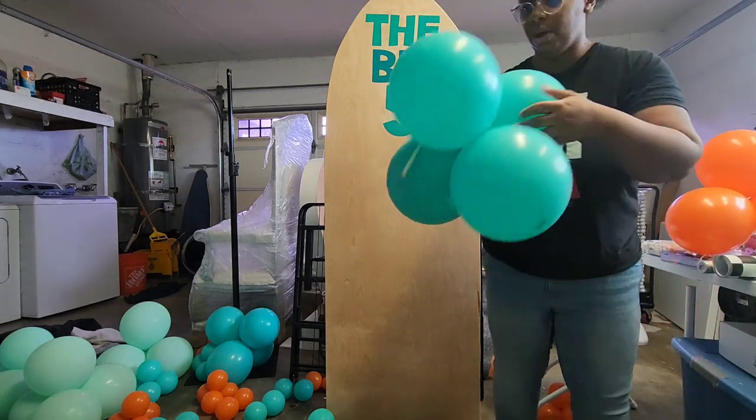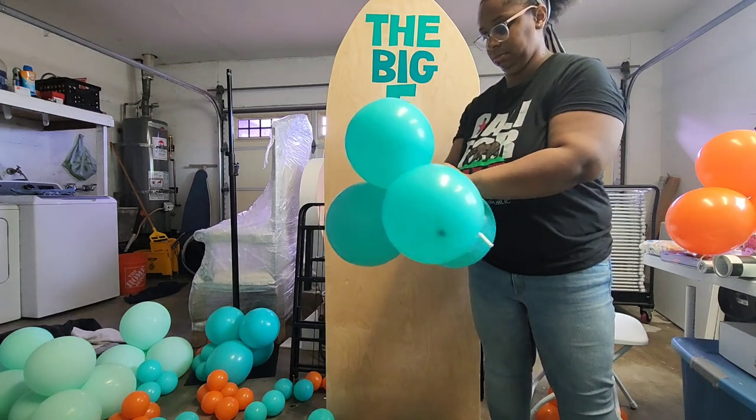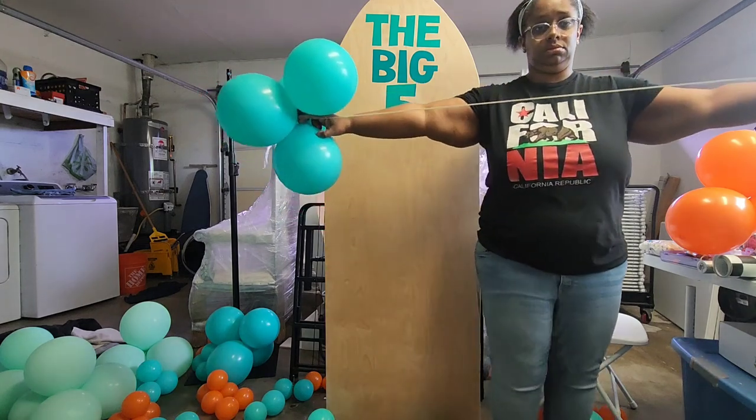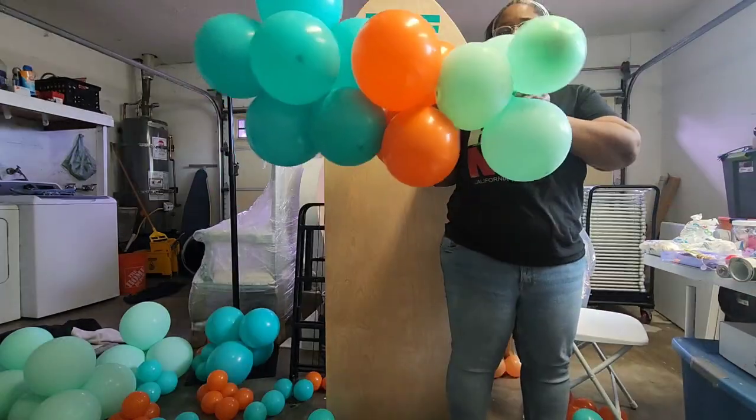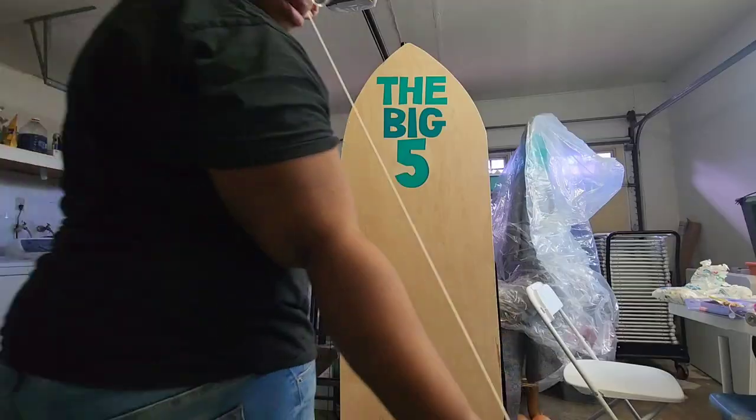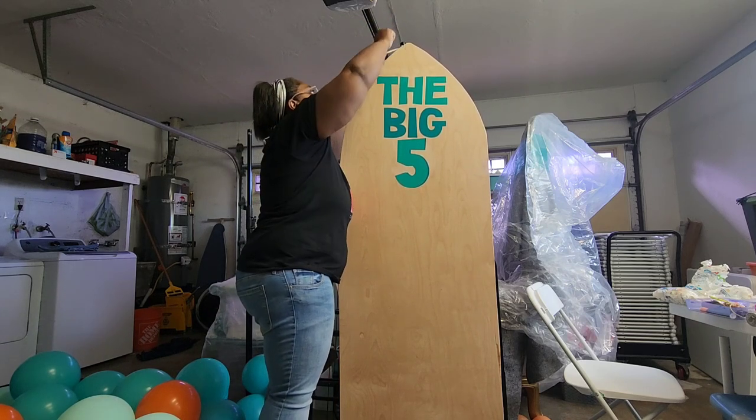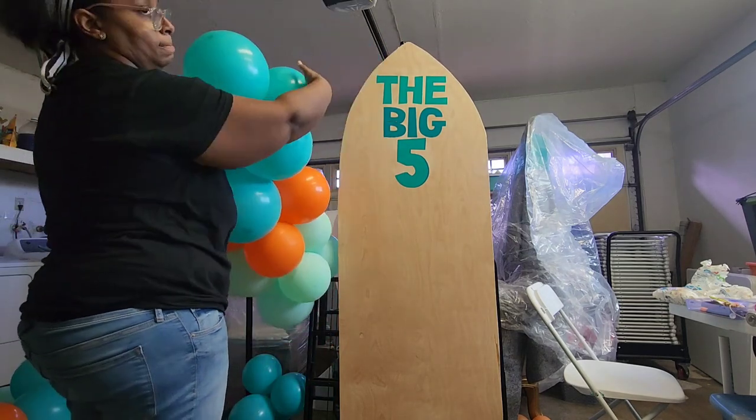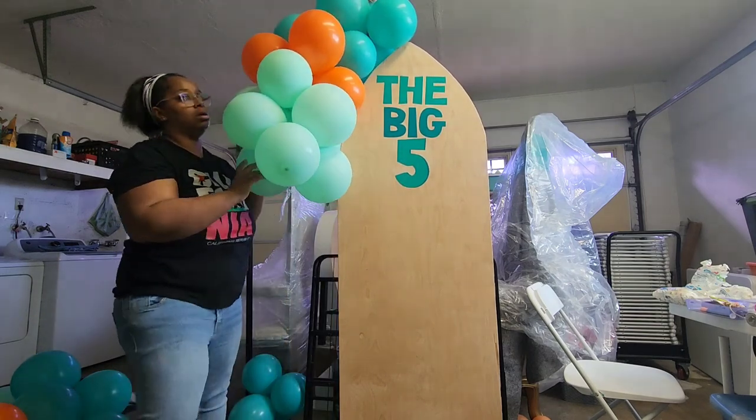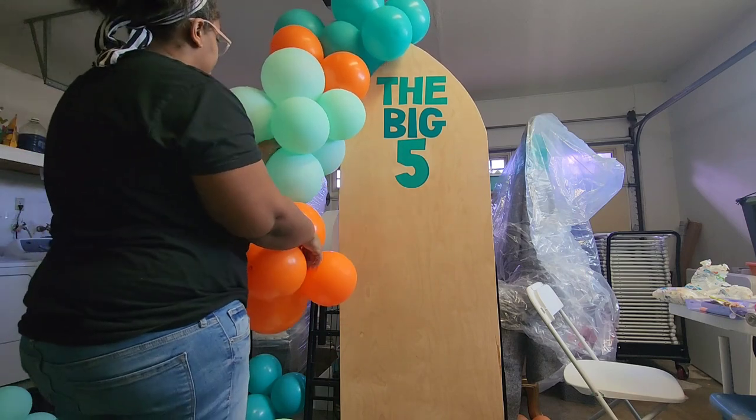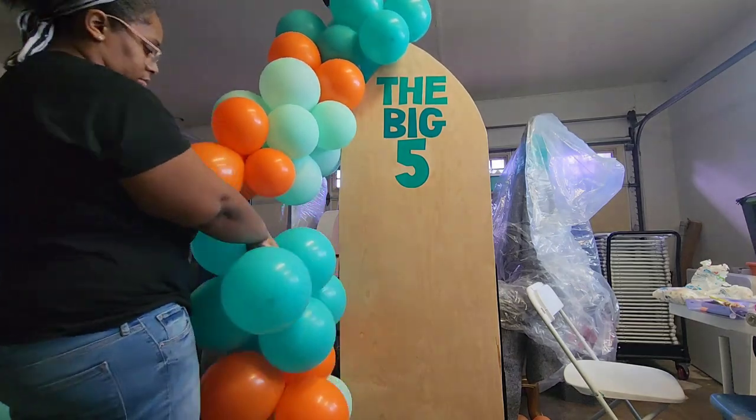Now that we have that, we're just going to start constructing the base of our balloon garland. And the cool thing about using the pipe and drape pole that I'm using is that it is concealed by the tip of the surfboard. And there is a hole at the top that usually holds the crossbar, but I looped my 260 through that hole and then made a loop so then that way I can just secure my garland.